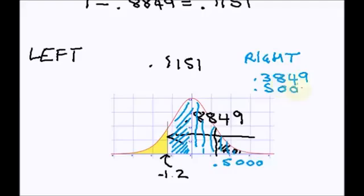And if I go ahead and do that, I get exactly the same answer, 0.8849. Subtract from 1, I will get 0.1151 for the area.